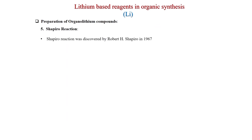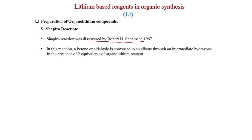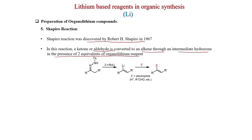The Shapiro reaction is also a popular method, discovered by Robert H. Shapiro in 1967. In this reaction, a ketone or aldehyde is converted to an alkene through an intermediate hydrazone in the presence of two equivalents of an organolithium reagent. The hydrazone, when treated with 2 equivalents of n-BuLi, forms a vinyl lithium species; treatment with an electrophile incorporates the electrophile at the double bond.